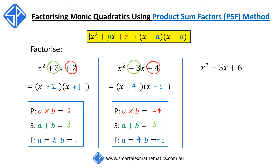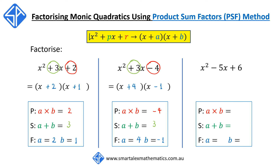Our last example is x squared minus 5x plus 6, again using the PSF method. P stands for product — we're looking for two numbers a and b that multiply to give the constant 6. S stands for sum — we're looking for the same two numbers a and b that add to give the coefficient of x, which is negative 5.